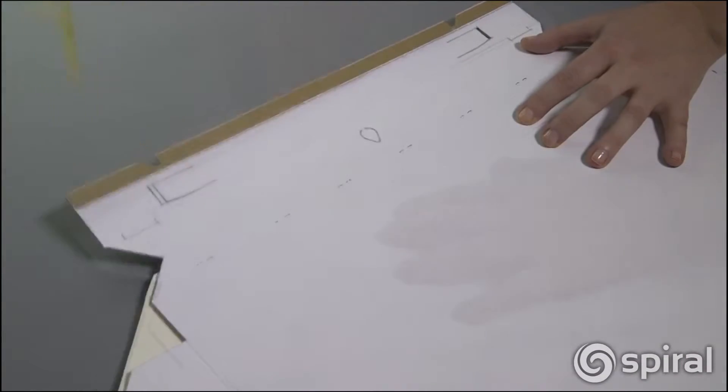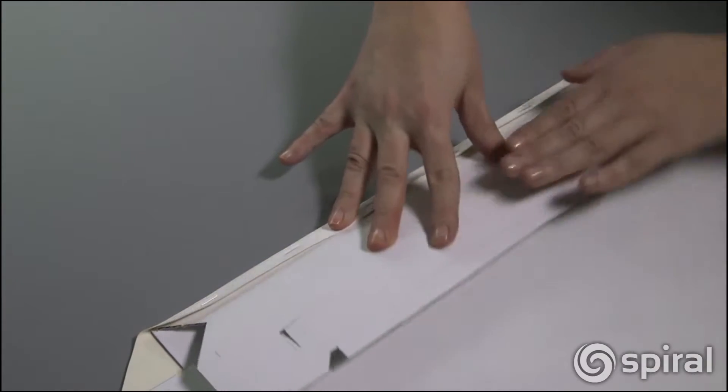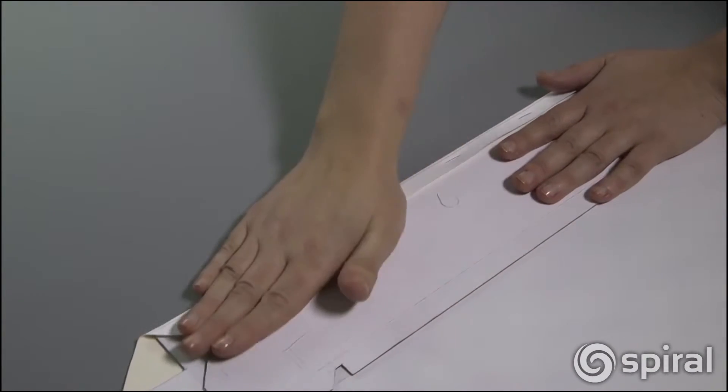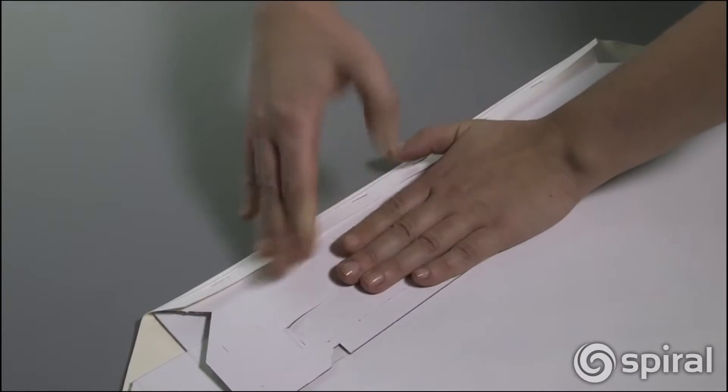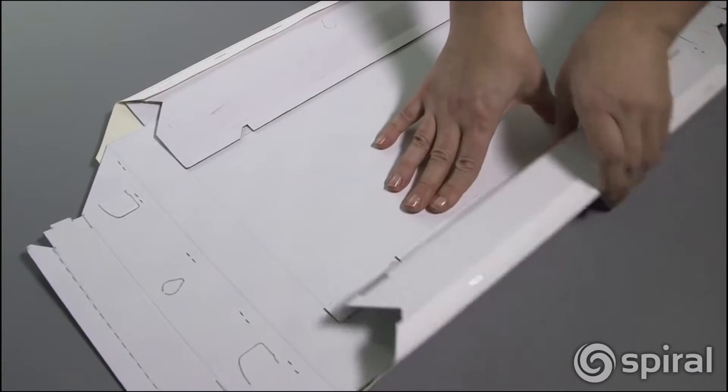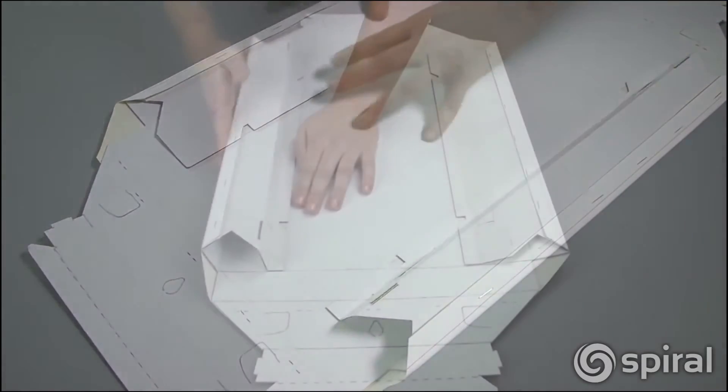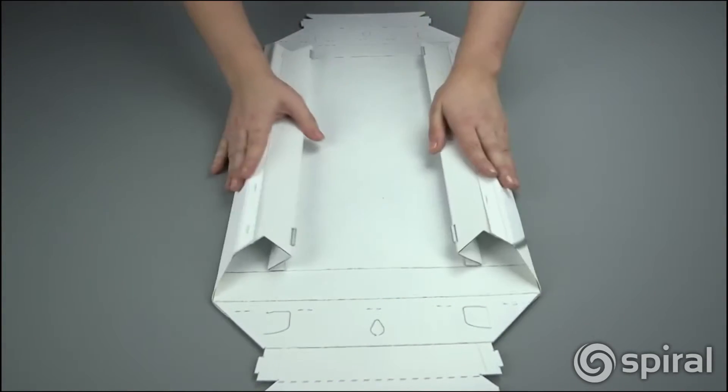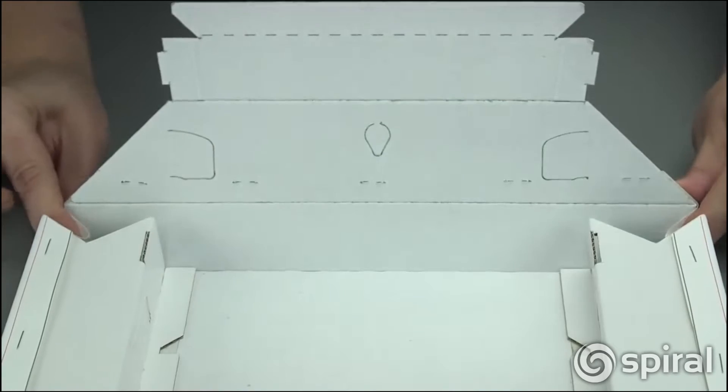Fold back on itself at the middle crease. Push down the sides ensuring they're flat and press the adhesive firmly. Repeat on the opposite side. Lift up the sides to form the channels.